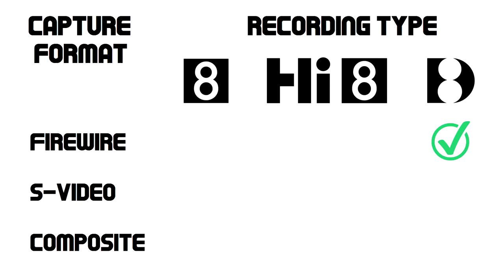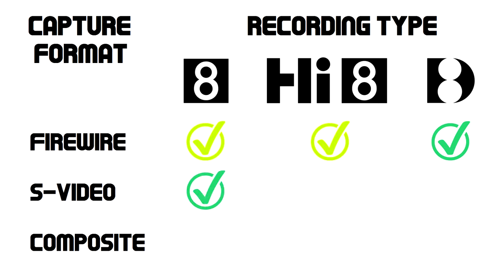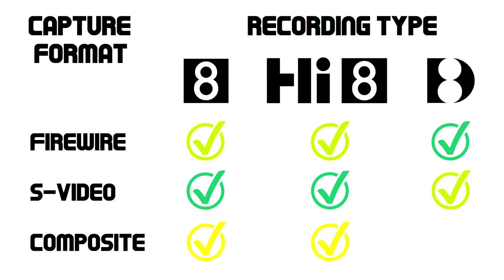FireWire is the best option for Digital 8, and is an easy and reliable option for analog video. S-video is the best option for analog video if you know what you are doing, and is an acceptable option for Digital 8. Composite offers the lowest quality and should be avoided if possible.